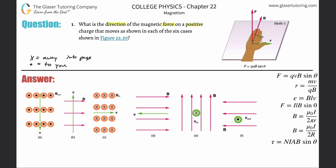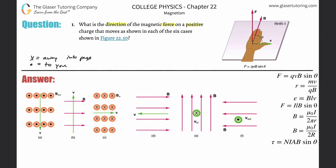Now let's apply right hand rule number one. Take your hand — it's going to feel awkward at first — and work with one vector at a time. Don't try to look at velocity and magnetic field at the same time; do the velocity first. In rule number one, the thumb represents the velocity. Fix your hand rigidly: point your fingers away from you, your thumb to the right, and your palm will be facing up, almost like you're asking for money.